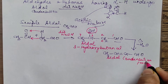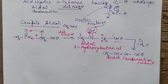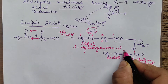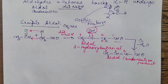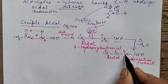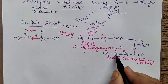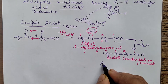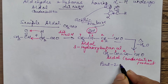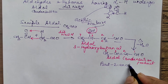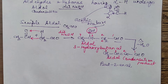The condensation product after removing water is CH₃−CH=CH−CHO. The IUPAC name: numbering from the right gives 1, 2, 3, 4. There is no prefix. The word root is 'but', there is a double bond at position 2 giving 'en', and the aldehyde is 'al' at position 1. So the IUPAC name is but-2-en-al. This is the simple aldol condensation product.